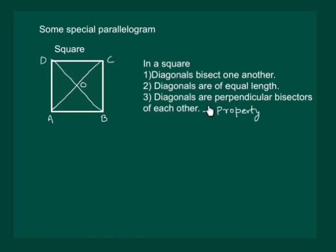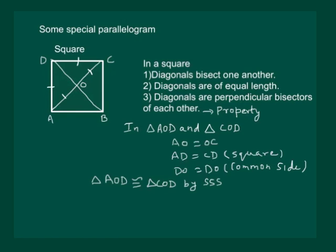To prove the third property, which is specific to a square, we draw the diagonals of square ABCD and consider triangles AOD and COD. We have AO equal to OC since the diagonals bisect each other; AD equal to DC by the property of the square; and OD equal to OD as a common side. So the triangles are congruent by SSS property.